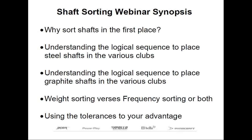In our last webinar, we discussed the principles of swing weighting, which I hope gave you a better understanding of tolerances and why swing weighting is a form of not only quality control, but how to react properly to reduce them. Much like swing weighting, this webinar is going to talk about tolerances and how to properly react to them. I'm going to discuss sorting shafts prior to tip trimming or any other assembly procedure and the reasons why. Swing weighting and shaft sorting do go hand in hand.